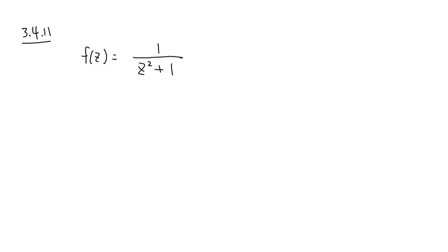3.4 number 11, our function here is f of z equals 1 over z squared plus 1. Even though by the look, this suggests that it's used to the quotient rule, and the quotient rule will work, but let's not do that.